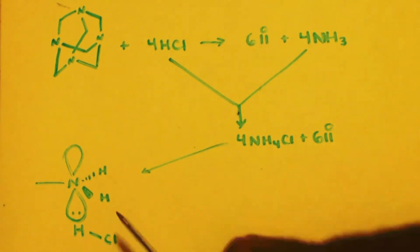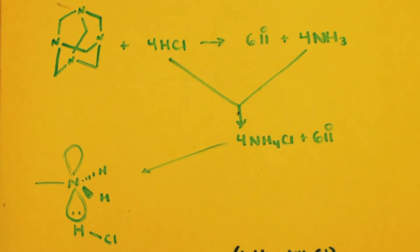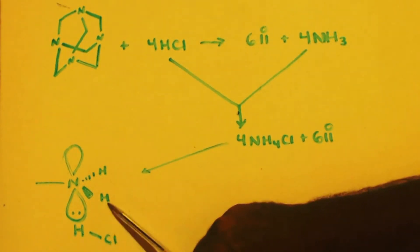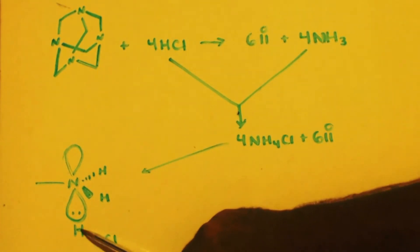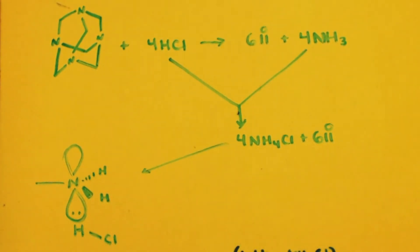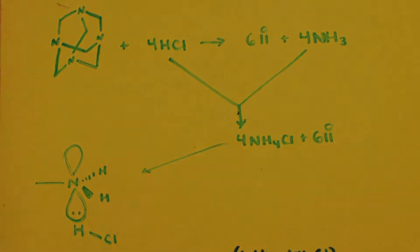The salt is soluble in polar stuff like water. And if you freebase this to get the HCl off of there — to neutralize that HCl — it goes back to just methylamine, which is soluble in non-polar stuff.